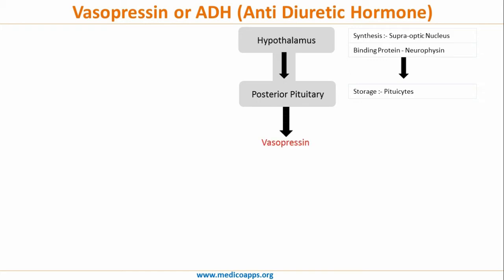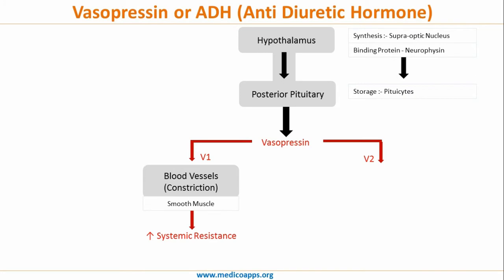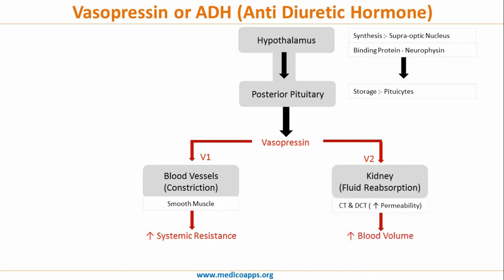From the posterior pituitary, vasopressin is released into the circulation where it acts on two different receptors: the V1 receptors and V2 receptors. V1 receptors are present on blood vessels, where they lead to the contraction of smooth muscles and constriction of blood vessels. This constriction leads to an increase in systemic resistance.